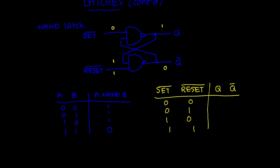This is sort of the opposite of what we had for the NOR latch. The reason there's a bar over set and reset is because they are what's called active low. Active low means a signal has its intended effect not when it's high, but when it is low. So set-bar being zero means the set input is active — it's setting the latch, making Q high and Q-bar low.